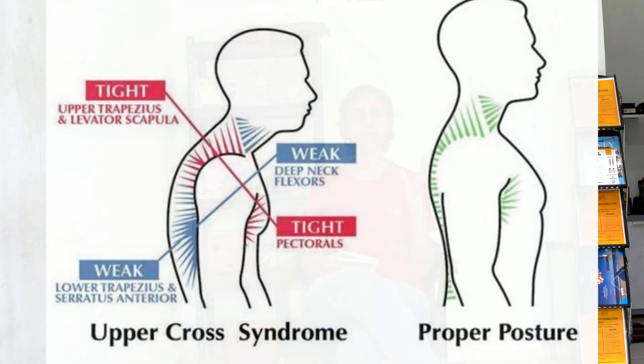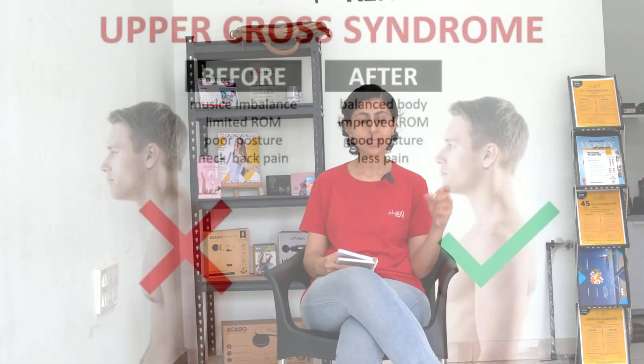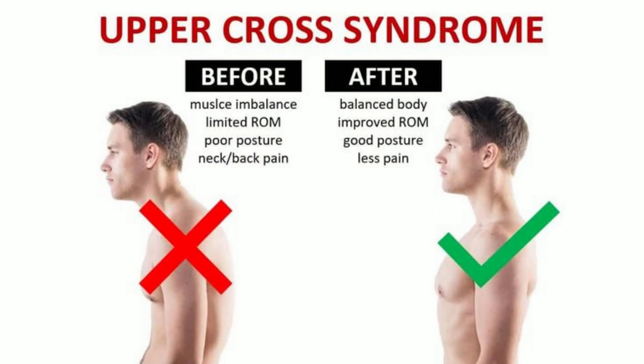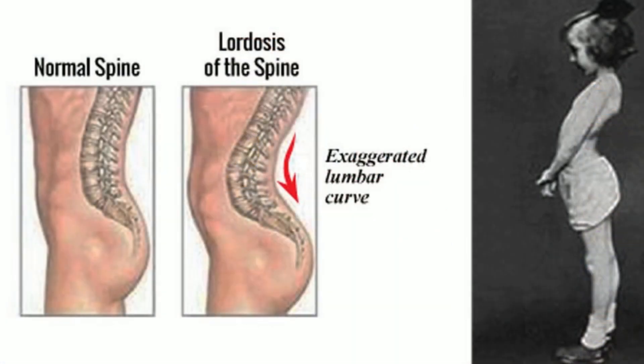Upper cross syndrome affects the neck and upper back: the back neck muscles and front chest muscles become tight, while the front neck and upper back muscles become weak, creating a hunchback posture that strains the back. In lower cross syndrome, the abdominal and paraspinal muscles become weak, the hip muscles become tight, and tightness develops at the thoracolumbar region — the junction of upper and lower back — leading to hyperlordosis and low back pain.